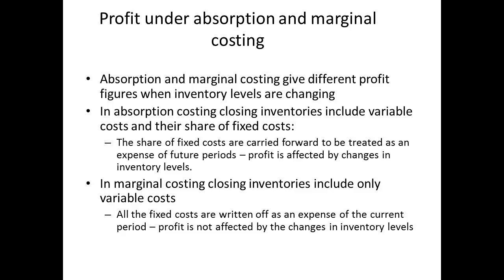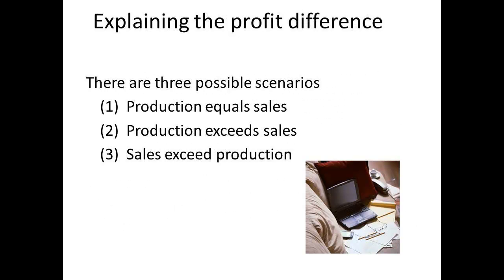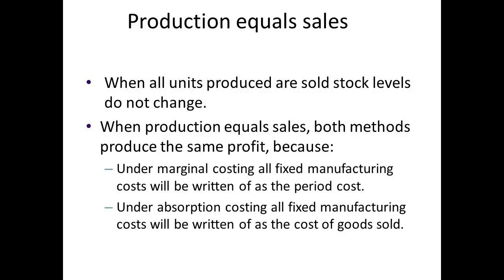This means that in absorption costing, a share of fixed costs will be carried forward and treated as an expense in future periods, whilst for marginal costing, all the fixed costs are an expense of the current period. There are three possible scenarios. When production is equal to sales, there will be no change in inventory. Both methods will give the same figure for profit, since under marginal costing all the overheads are written off for the period, and for absorption costing all the overheads have been written off in the cost of goods sold.